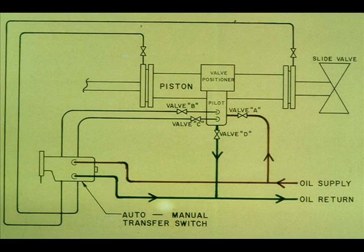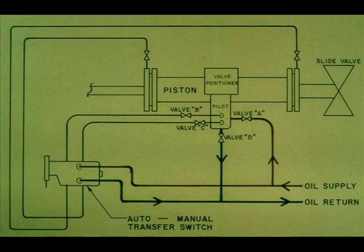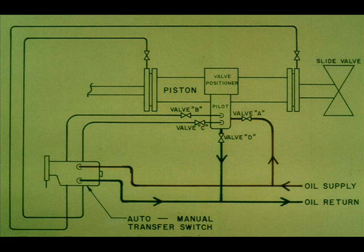This drawing shows the supply and drain lines, the auto manual switch, and the valve positioner. To bypass the positioner, close valves A, B, C, and D. Here is how the valves appear in the drawing.